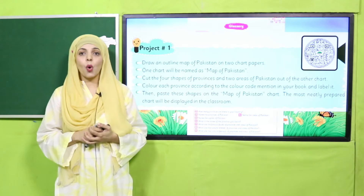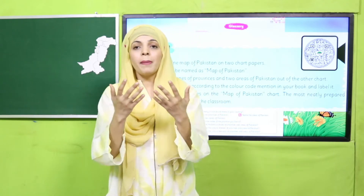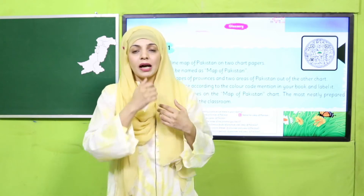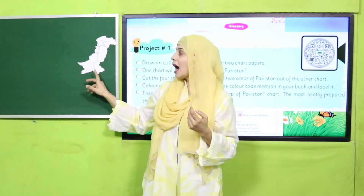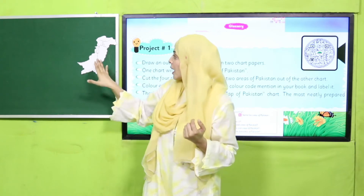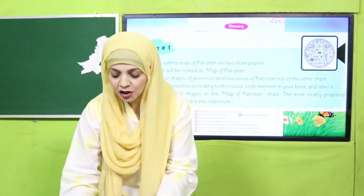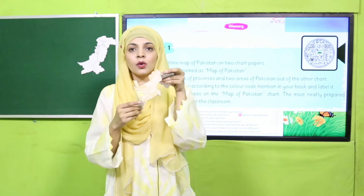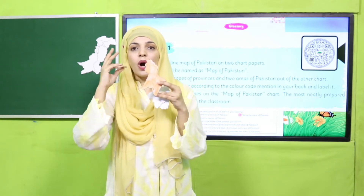I hope everybody has opened page number 11. So how will we perform this project? Your teacher will give you outlines of the Pakistani map — two outlines of the Pakistani map. The teacher will make groups in the class — you can make four or five groups according to class strength — and then provide them with the two outline maps of Pakistan. One outline will remain intact, and from the second outline students in each group will cut out the provinces and then color them according to the color code given in your book.